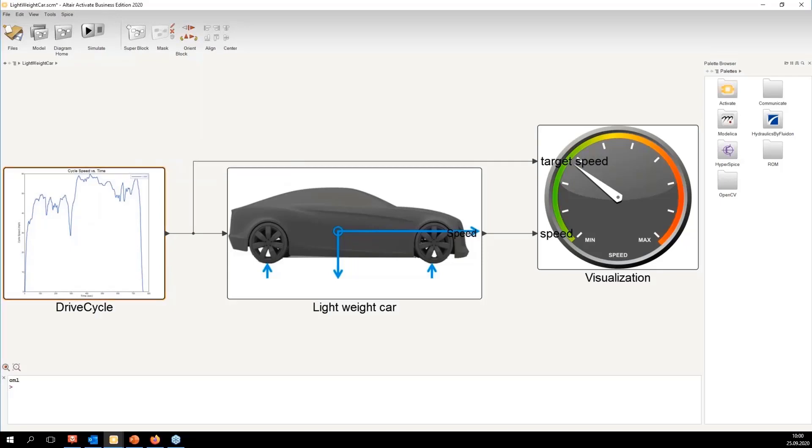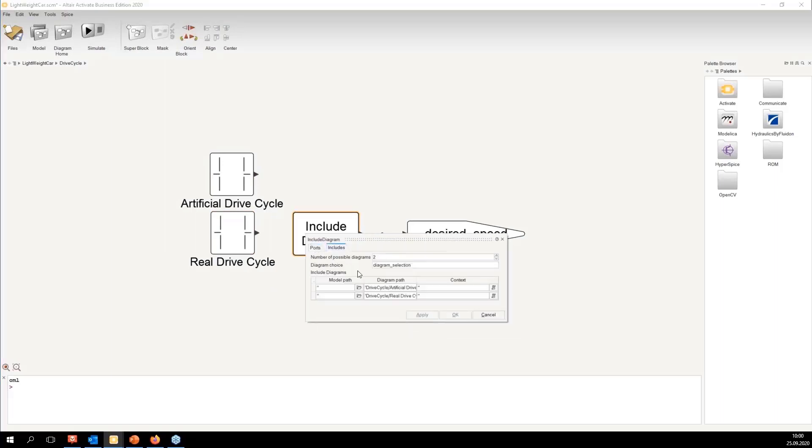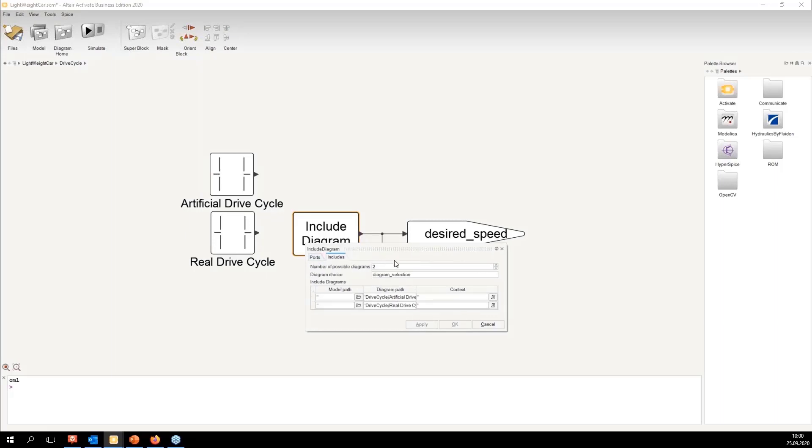This is a pretty nice idea with the mask. We can go in here, and you see here a super block for an artificial drive cycle and a real drive cycle. Both are deactivated and the one will be activated.